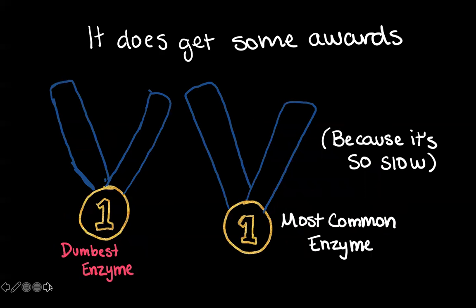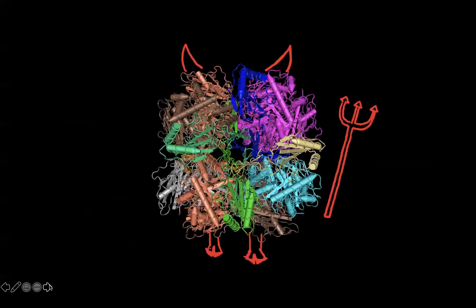Because it's so slow, plants and other photosynthetic organisms have to produce a lot of rubisco in order to produce enough sugar to keep them alive. And so because it's so slow and because it's so inefficient, it's also the dumbest enzyme. So next time you do pretty much anything at all, you can remember that it's thanks to rubisco sitting in the chloroplasts and cyanobacteria doing a really horrible job at sustaining all life on Earth.